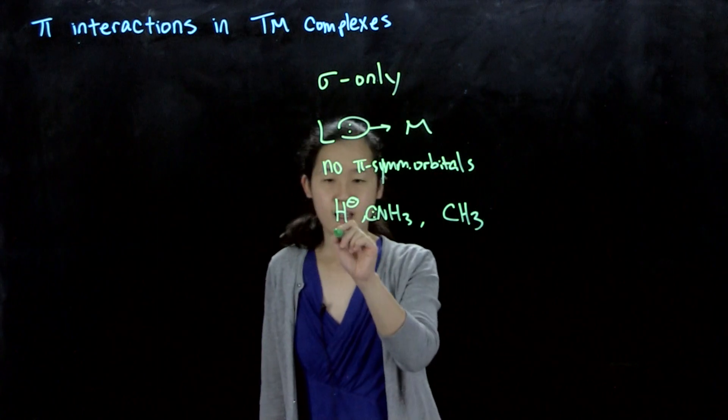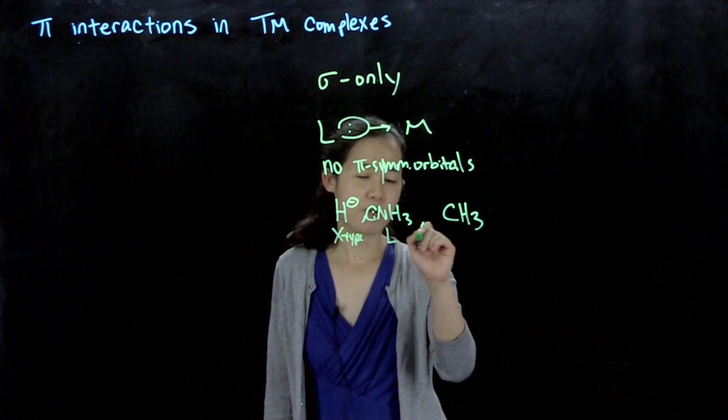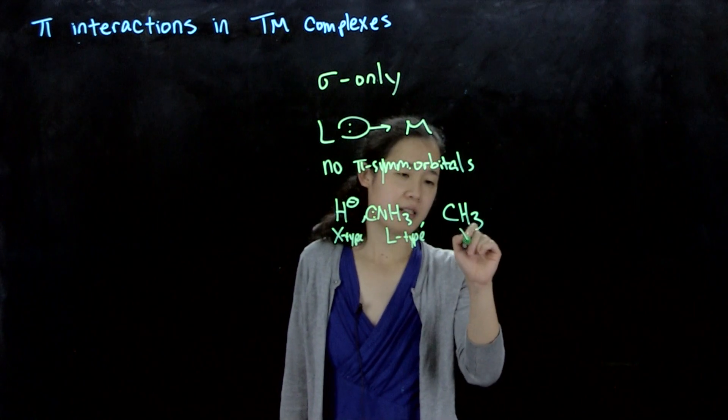These are X-type. Ammonia is L-type because it's neutral. And then methyl is an X-type.